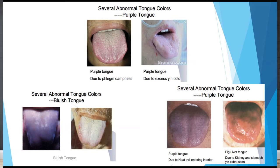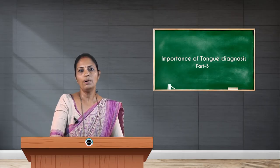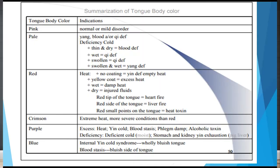Bluish tongue is mainly due to stagnation of qi or blood. Purple tongue is also associated with excess of interior heat. Purple tongue can also be seen due to kidney and stomach exhaustion.